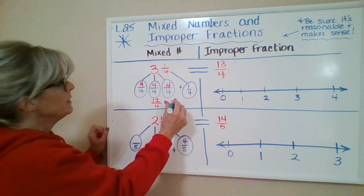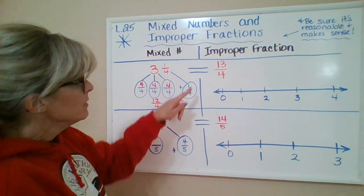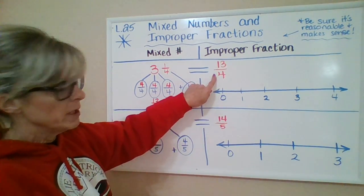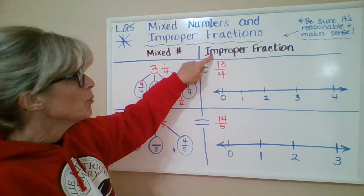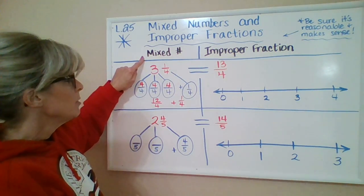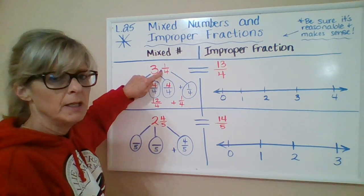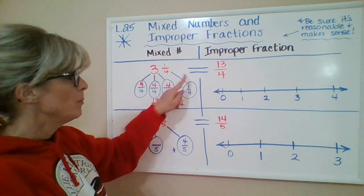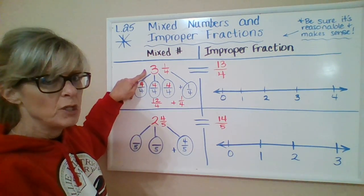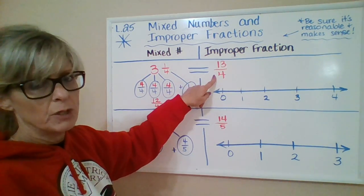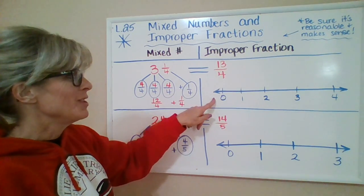That means there are a total of 12 fourths over here because if you count by fours: four, eight, twelve, plus one-fourth over here, that equals up to 13 fourths. This type of number with the numerator that's larger than the denominator is called an improper fraction. A mixed number has a whole number in front with a fraction behind it, so they are still equivalent.